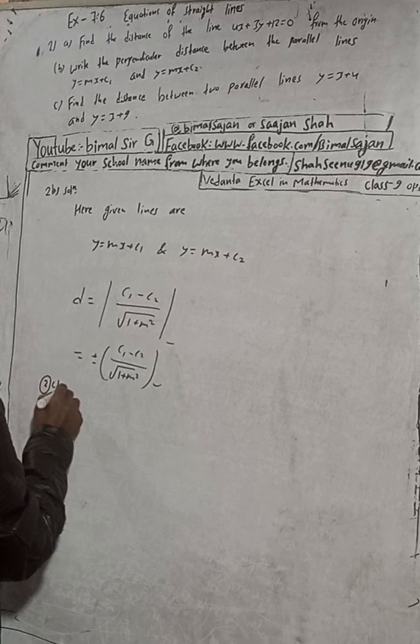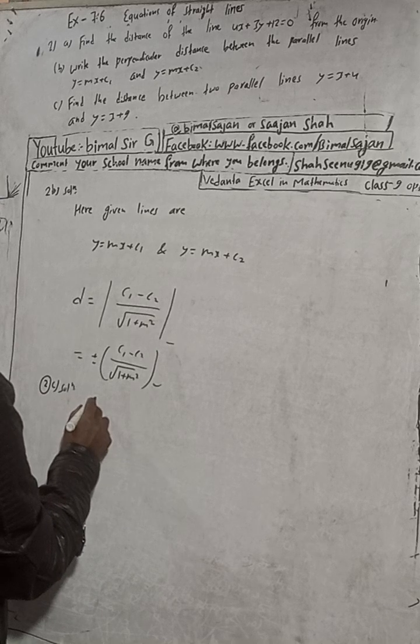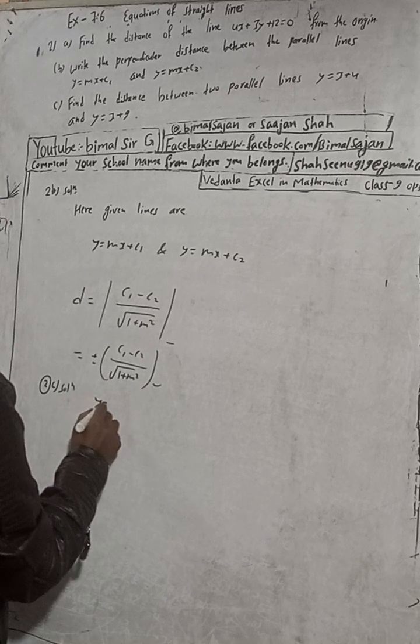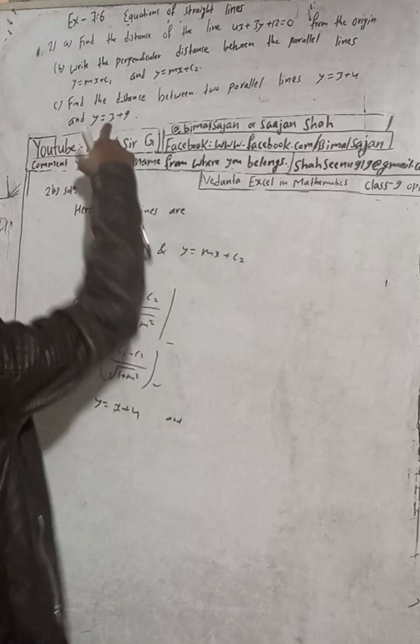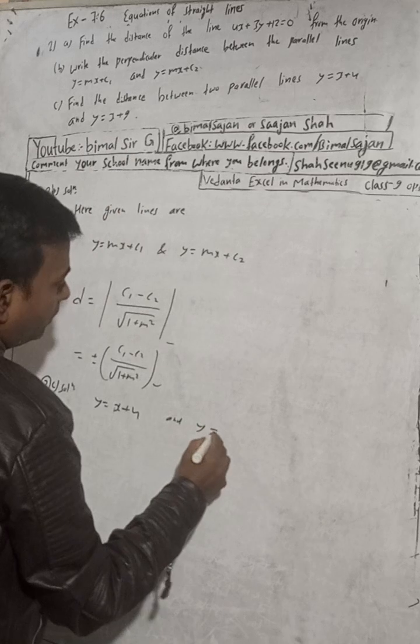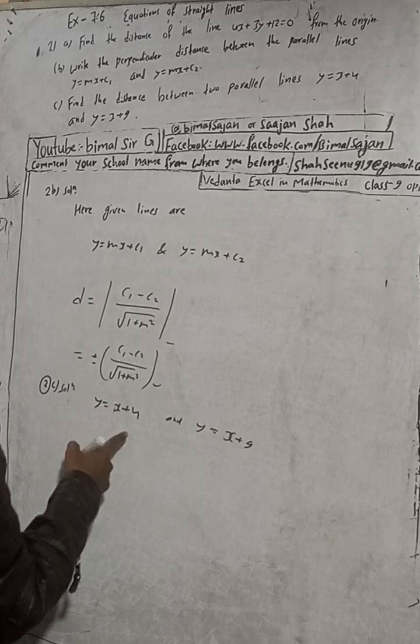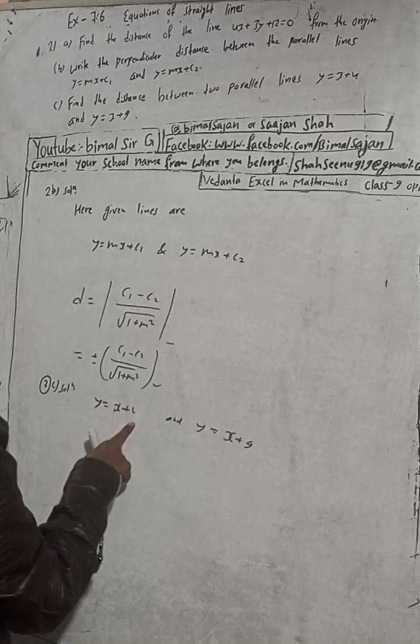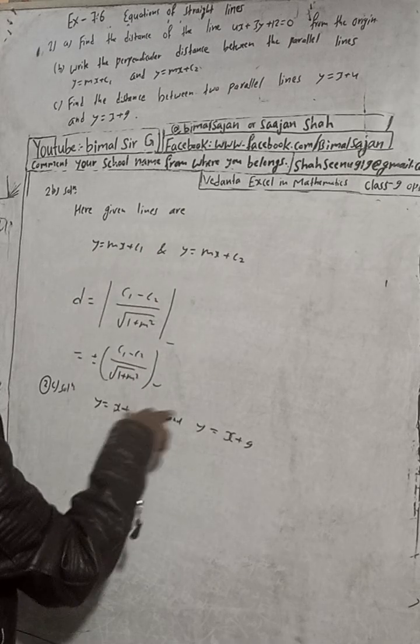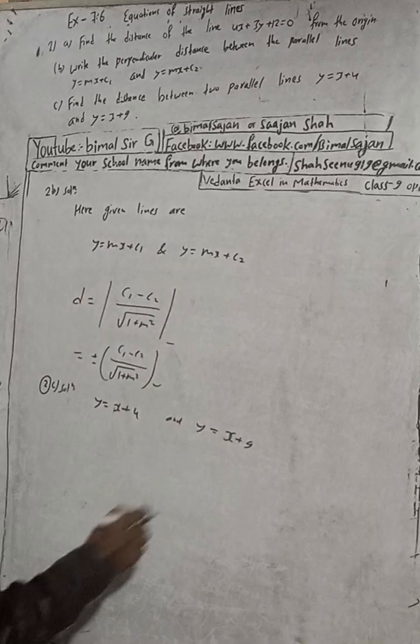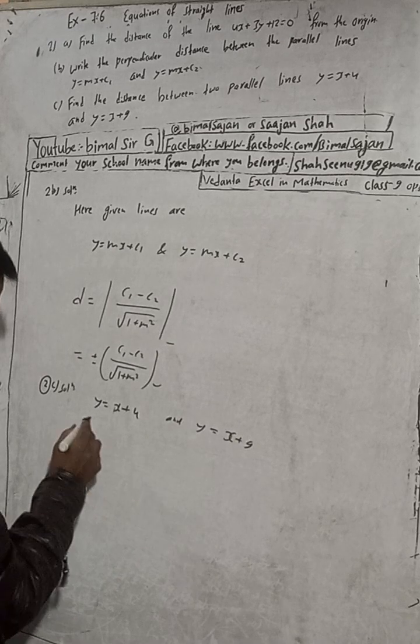Solution: The given lines are y equals x plus 4 and y equals x plus 9. Applying the same formula, we see these are of the form y equals mx plus c1 and y equals mx plus c2. For easier comparison, I'll write them as y equals 1 times x plus 4 and y equals 1 times x plus 9.